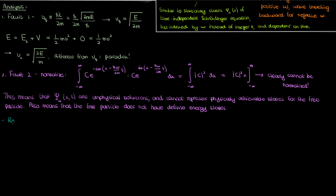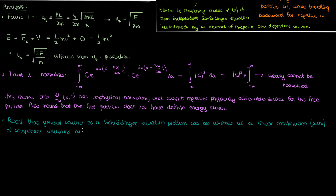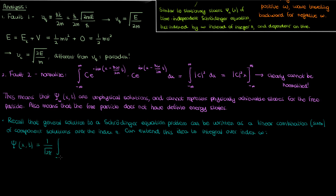But there is a way around this. Recall that when we have component solutions to the Schrödinger equation, we can write the full general solution as a linear combination of these components over the index they're indexed by — as seen in my infinite square well and harmonic oscillator videos. But what if we extend this sum over an index n to an integral over the continuous index omega? The general solution capital Psi of x and t is then the infinite integral over omega of my exponential times a function phi of omega, with a factor of one over square root of 2π out front for convenience.